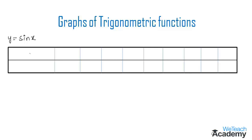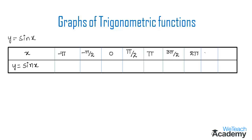In the table, the first row will contain the values of x and the second row will contain the values of y for the equation y = sin x. Let us consider different values of x in radians: negative pi, minus pi by 2, 0, pi by 2, pi, 3 pi by 2, 2 pi, 5 pi by 2, and 3 pi. Now let us find the values of y by substituting each x value into y = sin x.